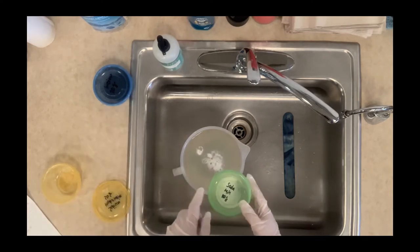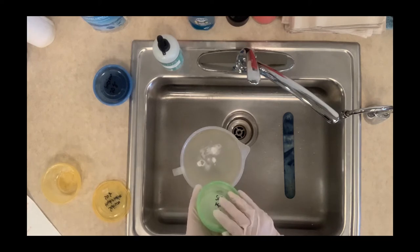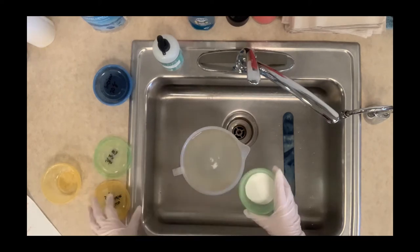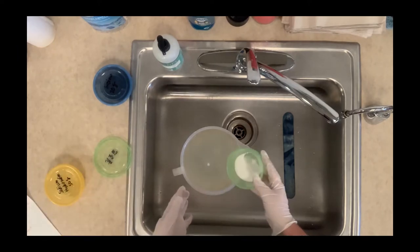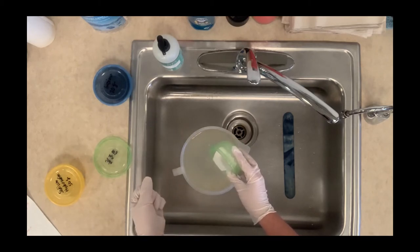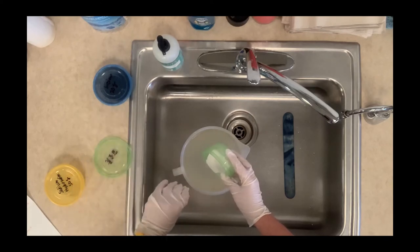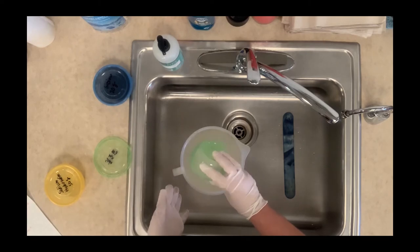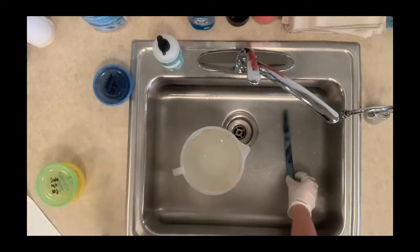Next I'm going to add soda ash. You might have used soda ash if you've done tie-dying in the past. This helps change the pH of the dye vat, which when you get more advanced, you worry about depending on what type of fabric you're going to be using. I'm going to gently stir these together.